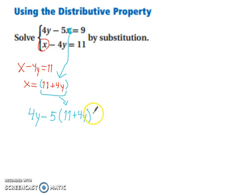This all equals 9. Everything else stays the same. The only thing you did was replace this variable with what it equals. Now we need to simplify and solve.